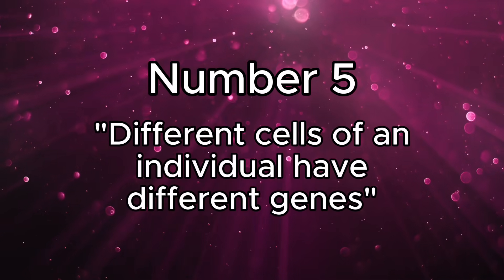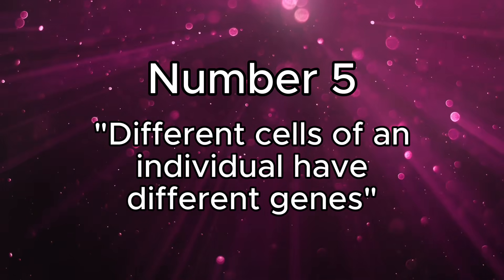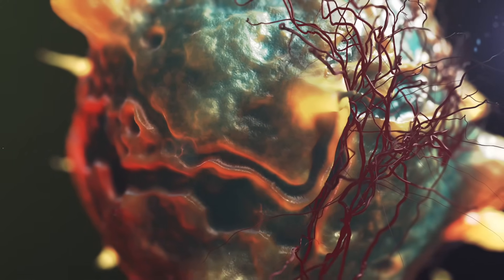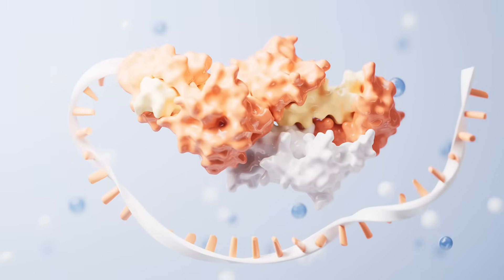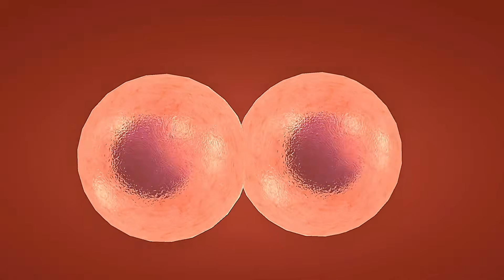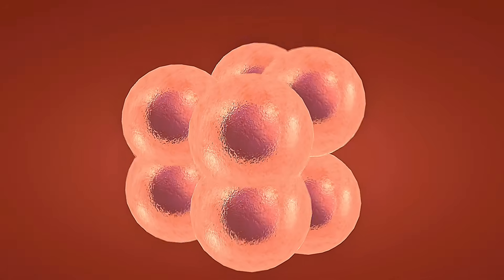Coming in at number 5, we have: different cells of an individual have different genes. This is a common answer to a question that usually involves why cells of a single organism may express different proteins at different times or in different tissues. It's really a question that pertains to cell specialization and gene expression regulation. But an answer you should never choose is one that implies that different cells have different genes. This is completely wrong, as all multicellular organisms begin as a single cell with a set of chromosomes that are subsequently and fully copied onto daughter cells. So all cells of a single organism are essentially clones, meaning you should never choose an option that states different cells contain different genes.